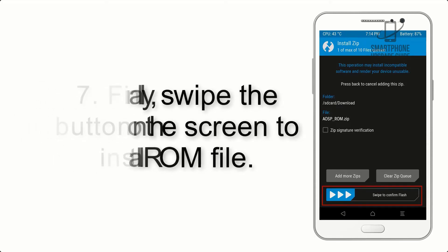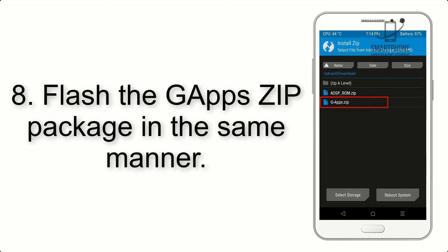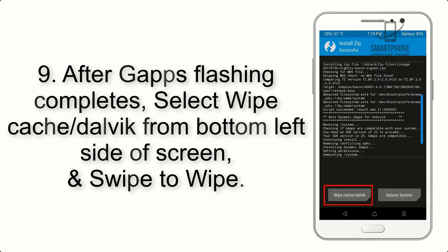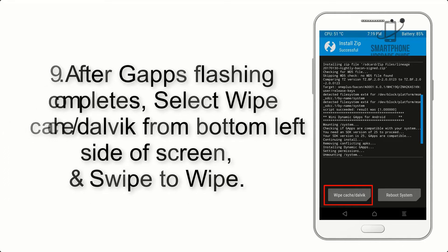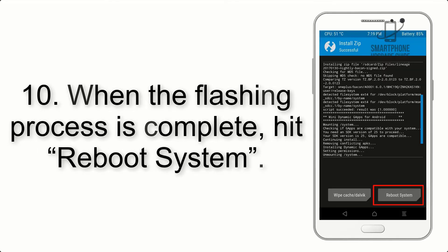Step 7: Swipe the button on the screen to install the ROM file. Step 8: Flash the GApps zip package in the same manner. Step 9: After GApps flashing completes, select Wipe Cache and Dalvik from the bottom left side of the screen and swipe to wipe.